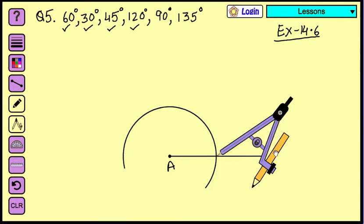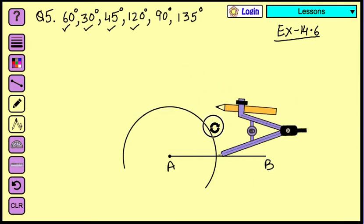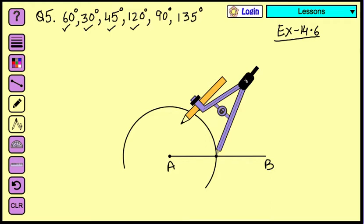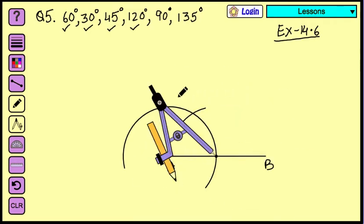And then make an arc which is going to cut this semicircle which you have already drawn. So once you are done, you will see that it has cut at one place over here. So this is your 60 degree.